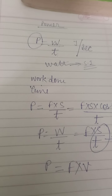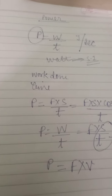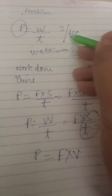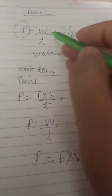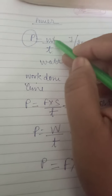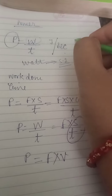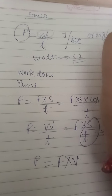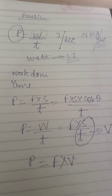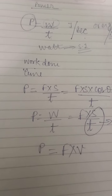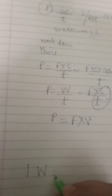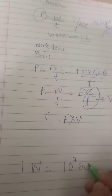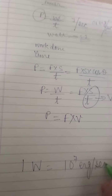The SI unit of power is watt and its other unit is joule per second. Its CGS unit is erg per second, because the CGS unit of work done is erg. The relation between the SI and CGS unit is: 1 watt is equal to 10 raised to power 7 erg per second.